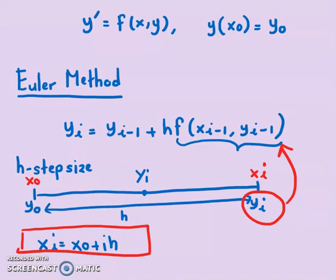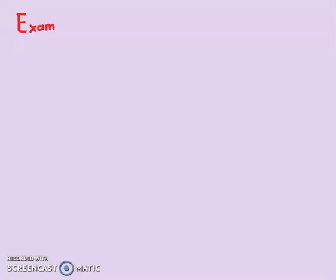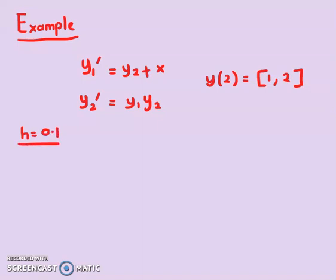Now let's look at one example on how to use the Euler method to solve a particular problem. Consider this first order differential equation system: y1-prime equals y2 plus x, and y2-prime equals y1 times y2. The initial condition is given as y-naught equals [1, 2] with step size h equals 0.1. We want to apply two steps of the Euler method.